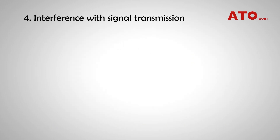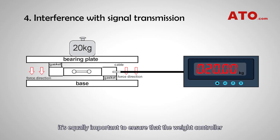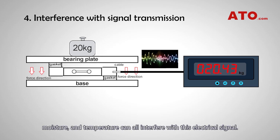Interference with signal transmission. In addition to ensuring that the load cells measure only the desired weight, it's equally important to ensure that the weight controller measures only the load cell electrical signal. Radio frequency interference (RFI), electromechanical interference (EMI), moisture, and temperature can all interfere with this electrical signal.